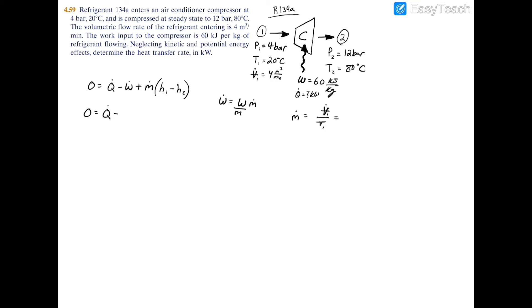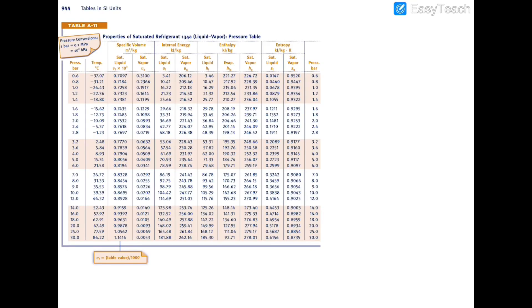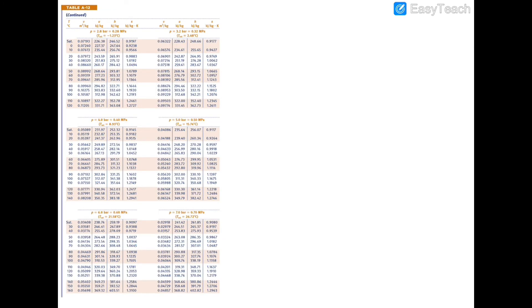Now that being said, m dot 1 still equals m dot 2 because that's mass. So to solve for the mass flow rate here, we're obviously going to need the specific volume. So at inlet 1 we have 4 bar and 20 degrees Celsius. So let's turn to table A-11 and see where we are on the property table. If you turn over to 4 bar, you have a saturation temperature of 8.93 Celsius. We were at 20 degrees Celsius, so we're in the superheated region. So if we turn to table A-12, go to 4 bar and 20 degrees Celsius, you'll have your specific volume as 0.05397 cubic meters per kilogram.